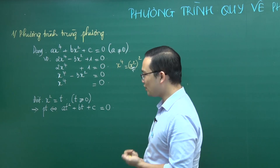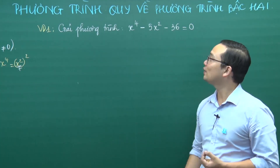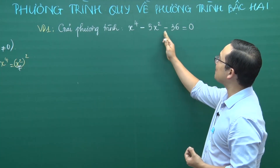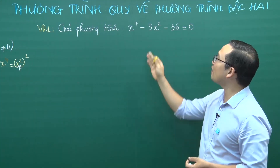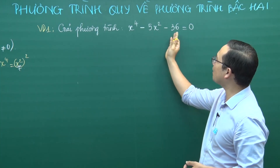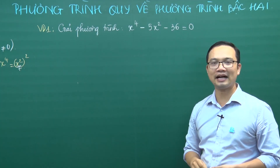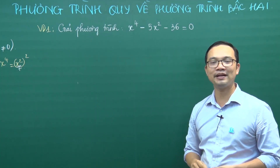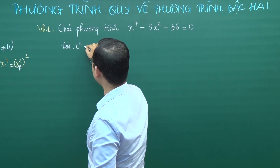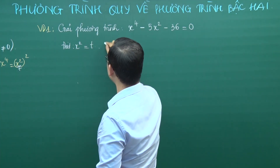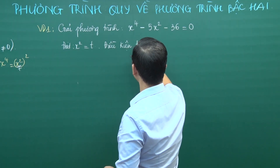Giờ chúng ta vào ví dụ số 1: Giải phương trình x⁴ - 5x² - 36 = 0. Các bạn nhận thấy đây là phương trình trùng phương vì có x⁴, có x², có hệ số tự do, không chứa x³ và x. Để giải, chúng ta đặt x² = t, điều kiện t ≥ 0.